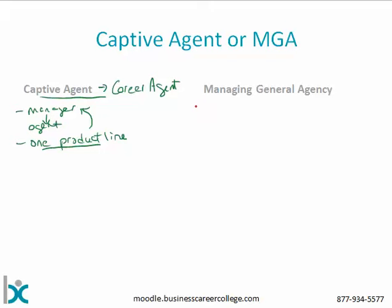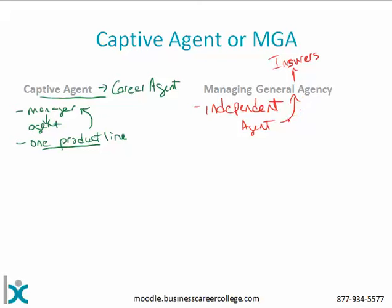On the managing general agent side, this person would be more independent. They will typically have a contractual relationship with the MGA, and the MGA in turn has contracts with insurers. It is possible to do this other ways — some people have a direct contract with an insurer, and there are associate general agencies and other variations — but this is the most common arrangement. This person typically has access to a broader product line.